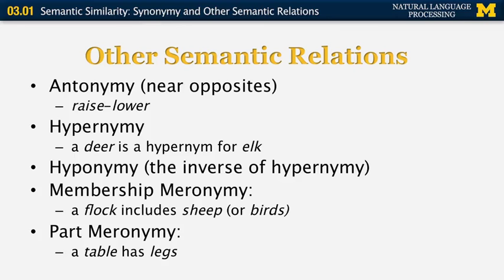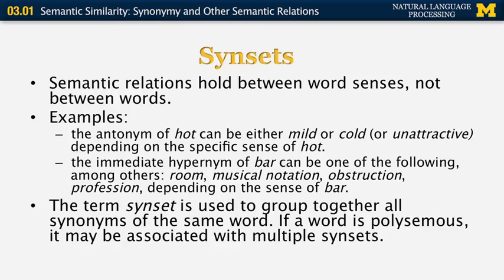Semantic relations hold between word senses, not between words. For example, the antonym of 'hot' can be 'mild' if hot is used in the sense of spicy, 'cold' if used in the sense of warm, or even 'unattractive' if hot is used in the sense of attractive. Similarly, the immediate hypernym of 'bar' can be 'room,' 'musical notation,' 'obstruction,' 'profession,' and so on, depending on the sense. As a result, people in the community use the term synset to group together all the synonyms of the same sense; if a word is polysemous, it may be associated with multiple synsets.